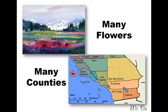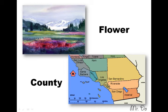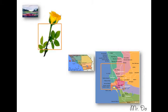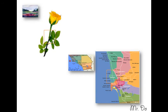So we zoom in — we're dealing with one flower, and that's equivalent to dealing with one county. So here we have one flower and we have one county. Inside the flower, there are many cells. Inside the county, there are many cities.